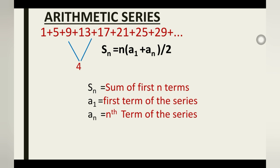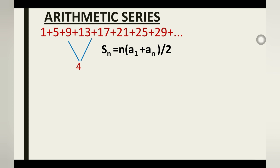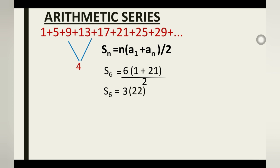Now let's use the formula to find the sum of the first 6 terms. S_6 = 6 × (a_1 + a_6) / 2. Our first term is 1, and the 6th term — counting 1, 5, 9, 13, 17, 21 — is 21. So S_6 = 6 × (1 + 21) / 2 = 6 × 22 / 2 = 3 × 22 = 66. So S_6 = 66.